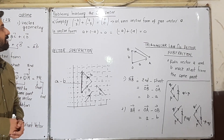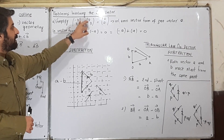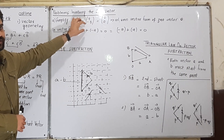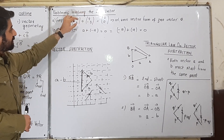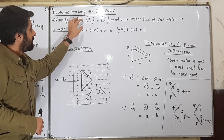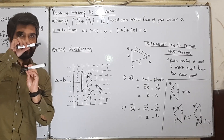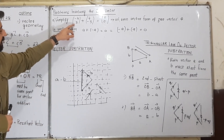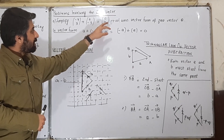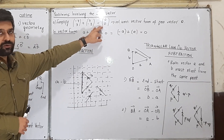For example with column vectors: (-4, 3) plus (4, -3) — these are negatives of each other. The components have the same magnitude but opposite signs, meaning their directions are opposite. Their sum gives the zero column vector (0, 0), which is the column vector form of the zero vector.